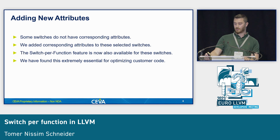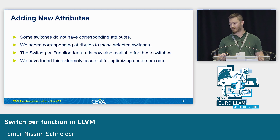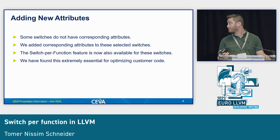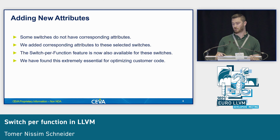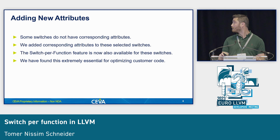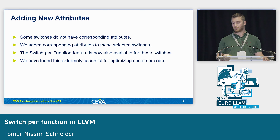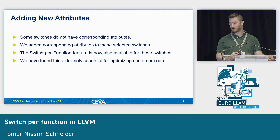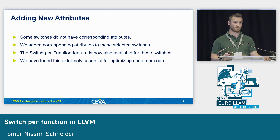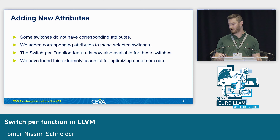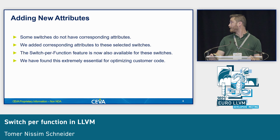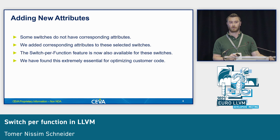After doing that, we noticed that some switches don't have a corresponding attribute at all in LLVM. Since we can already control things at the file level with those switches, we also want the option to control them at the function level. To solve that, we added corresponding attributes for the selected switches — not all switches, but the ones we chose as relevant. This way, the switch-per-function mechanism can be used for those functions too. We found it very important for our customers to be able to optimize different functions in the same file with different code generation settings.